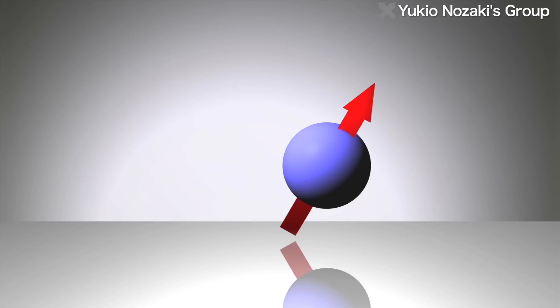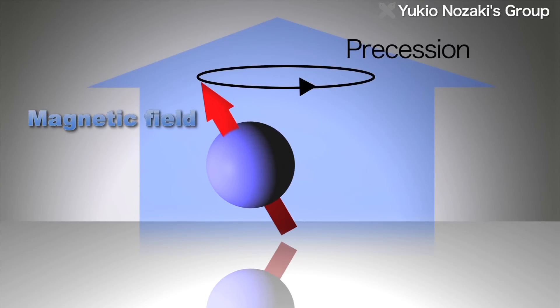Electron spin is one form of an electron's angular momentum. The direction of spin changes when an electron is placed in a magnetic field. It's a precessional motion like that of a top in a gravitational field.